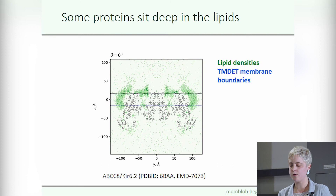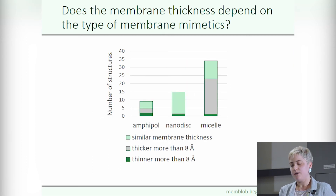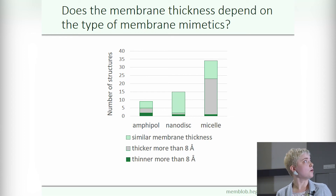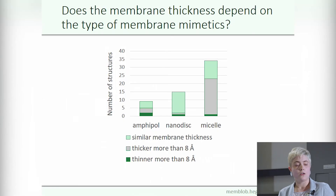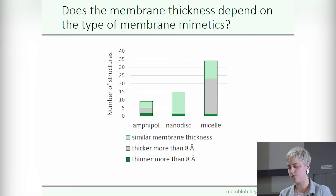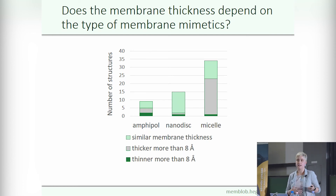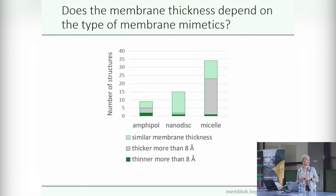This thicker membrane environment is often caused by the deep embedment of the protein into the lipids, so short regions predicted to be extracellular are indicated as intramembraneous by our pipeline. We investigated whether this deeper embedment depends on the type of membrane mimetic. We found that nanodiscs produce mostly similar membrane thickness to the TMDat predictions, while this is true for only half of the structures solved in amphipol. Approximately 60% of the structures solved in micelle have a thicker membrane environment than was predicted. Though we need to investigate more structures to confirm, we can assume that the type of membrane mimetic has an impact on the thickness of the resulting membrane blob and therefore the calculated transmembrane regions.